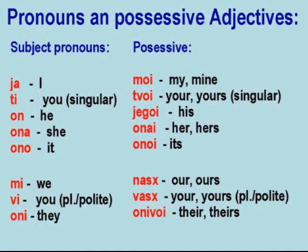Pronouns and Possessive Adjectives: Kto, štof — Ty — On — Ona — Ono — My — Vy — Oni. Moj — Tvoj — Jegoj — Onaj — Onoj — Naš — Vaš — Onivoj.